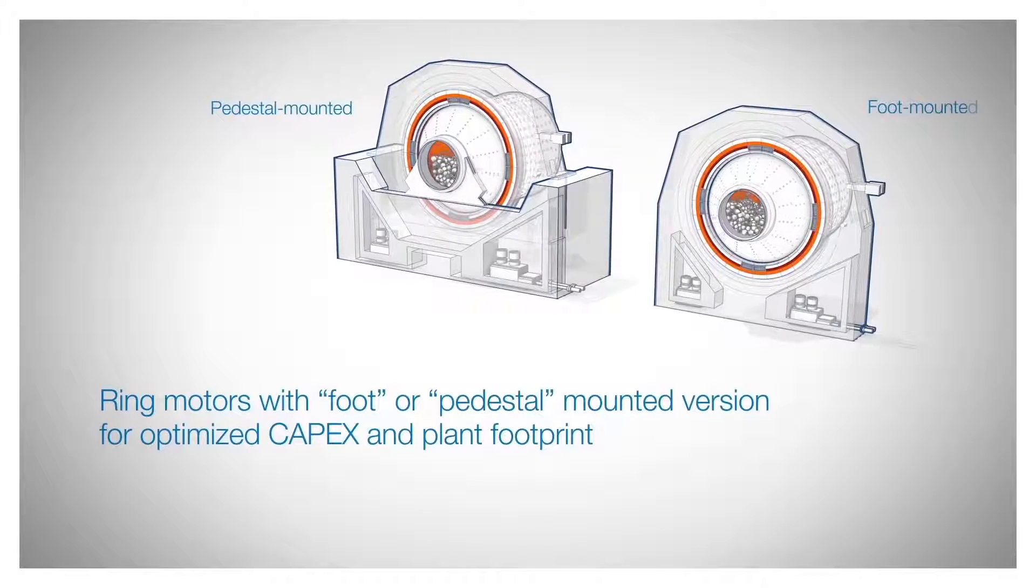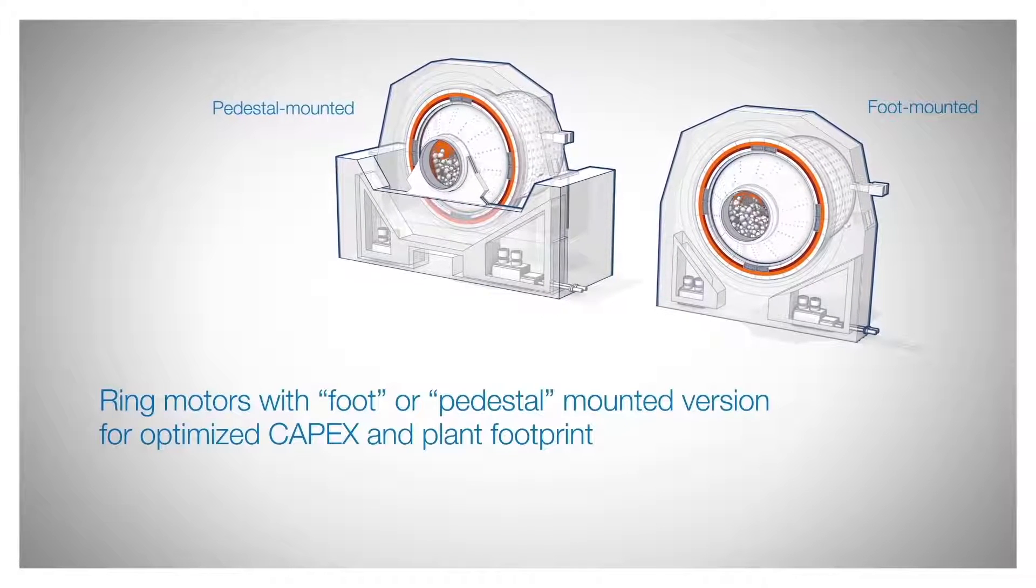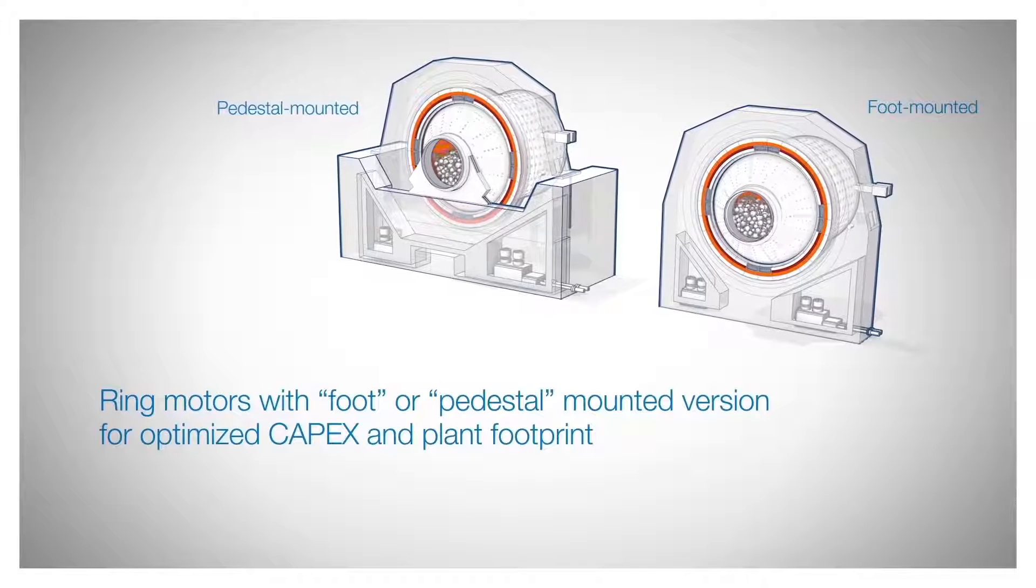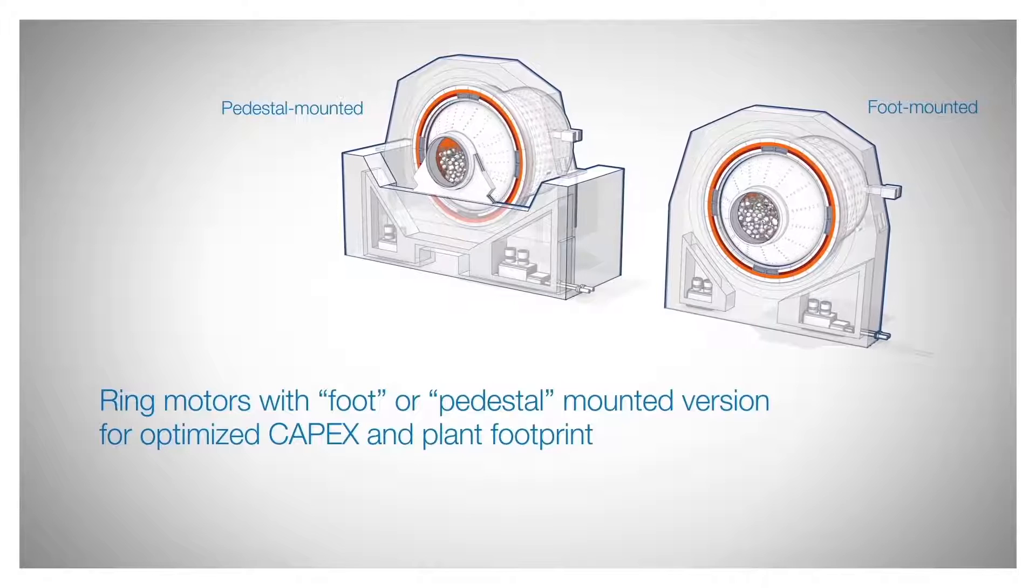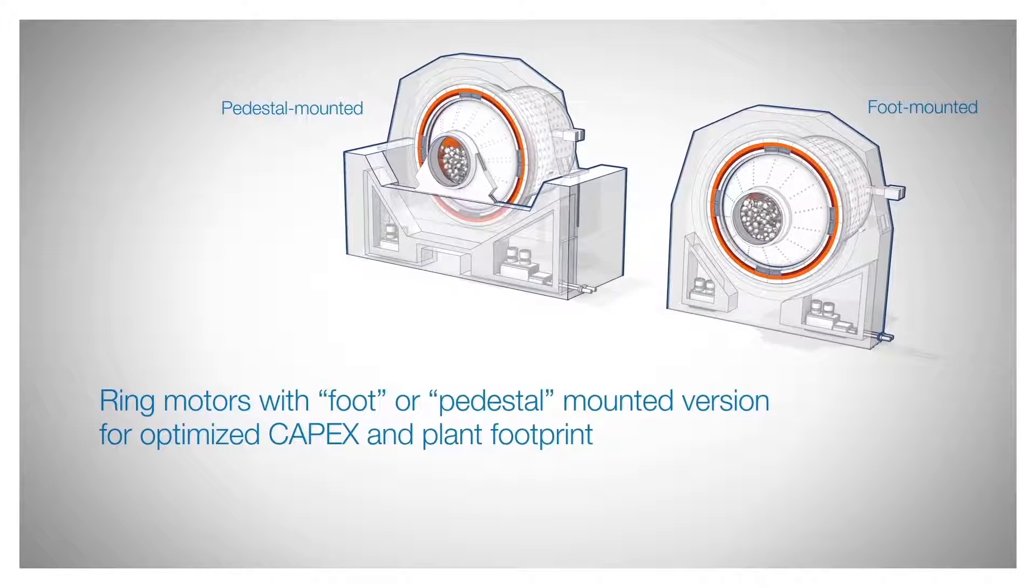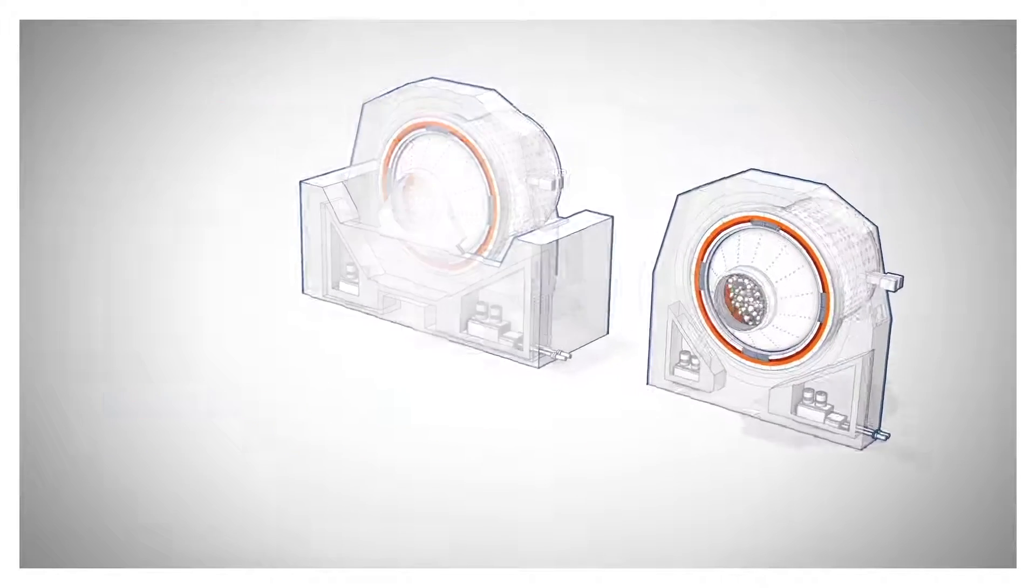ABB ring motors for ball mills can be designed as pedestal or foot-mounted version, depending on your individual site requirements. The foot-mounted design for mill sizes of up to 26 feet is the ideal solution to reduce plant footprint.